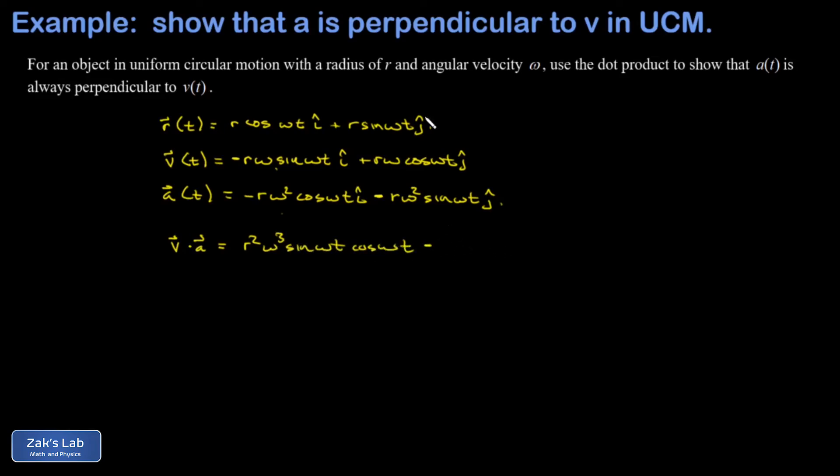And in my second term, I get a negative result because one of them is positive and one is negative. And I get an r squared omega cubed cosine omega t sine omega t. And then I realize everything in these two terms is the same, except one of them is positive and one is negative, so those add to zero.